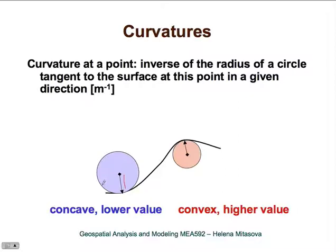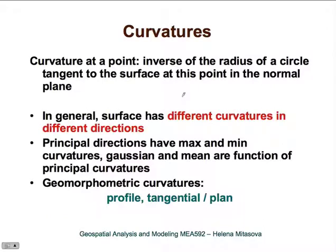A concave area has lower curvature values, while a convex area will have higher curvature values. One thing to remember about curvatures is that a general surface has different curvatures in different directions, and there are several curvatures with special properties.